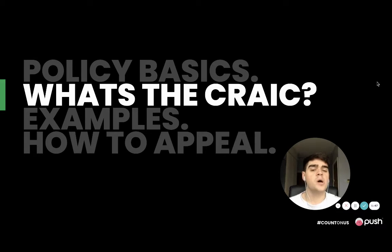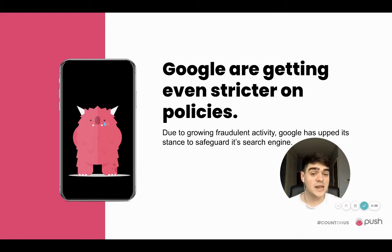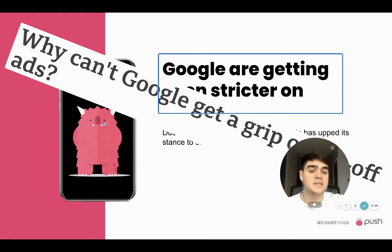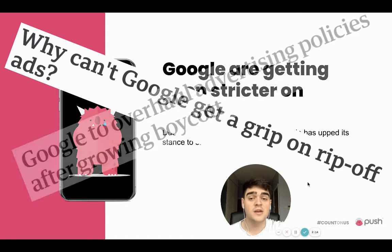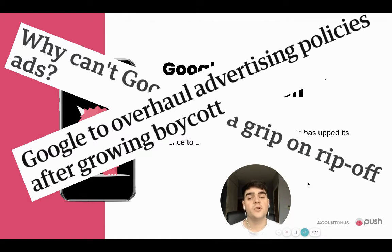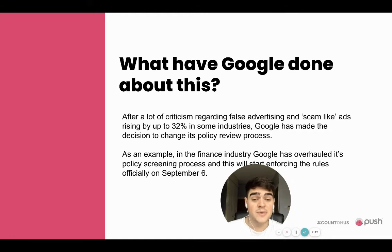So why am I covering this today? Google are getting even stricter on policies. Due to growing fraudulent activity, Google has upped its stance to safeguard its search engine. If you work day-to-day inside of Google Ads, you'll find that a lot more ads, a lot more frequently, are getting flagged up as breaking policy violations. You can see headlines like 'Why can't Google get a grip on rip-off ads?' and 'Google to overhaul advertising policies after growing boycotts.' After a lot of criticism regarding false advertising and scam-like ads rising up to 32% in some industries and verticals, Google has made the decision to change its policy review process.